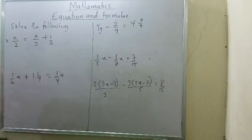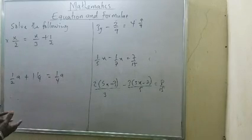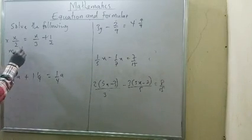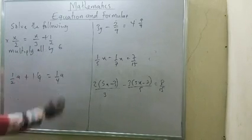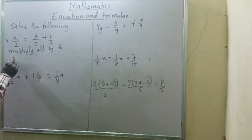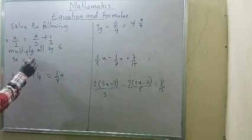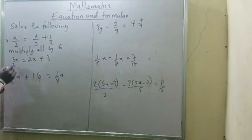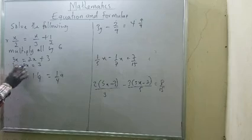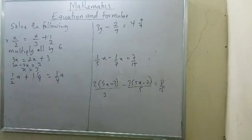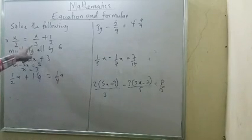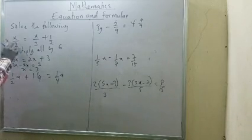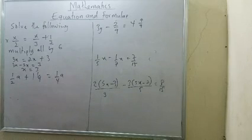For fraction equation (1): x/2 = x/3 + 1/2. The LCM of 2 and 3 is 6. Multiplying everything by 6 gives 3x = 2x + 3. Collecting like terms: 3x minus 2x equals 3, so x equals 3. Substituting x = 3 confirms that side A equals side B.